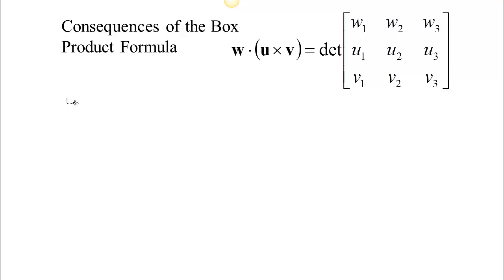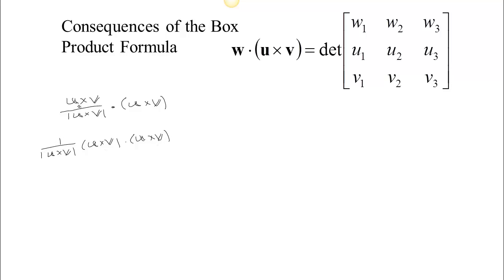What if we take the vector u cross v over its length — so now it's a unit vector — and dot it with u cross v? From the point of view of the dot product, we're talking about one over the length of u cross v, times u cross v, dotted with u cross v. This is just a scalar, so it comes out, and then we have u cross v dotted with u cross v. But if you dot a vector with itself, you get the length squared of that vector. So this is one over the length of u cross v, times the length of u cross v squared — that's going to equal the length of u cross v.